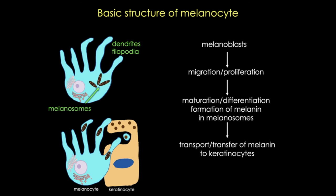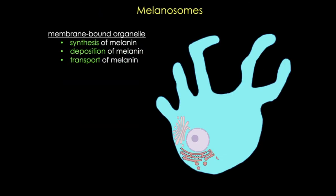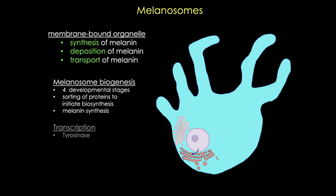Melanosome biogenesis occurs in several steps, but the key step is the synthesis of tyrosinase, which is necessary to convert tyrosine to DOPA. We start off with stage 1 vesicles that build inside a fibrillar matrix formed by glycoproteins. Then they acquire tyrosinase and other enzymes of melanogenesis, becoming stage 2. Now the melanosome is able to produce melanin, which polymerizes and settles on those internal fibrils. In stage 4, the melanosome is basically completely filled up with melanin.